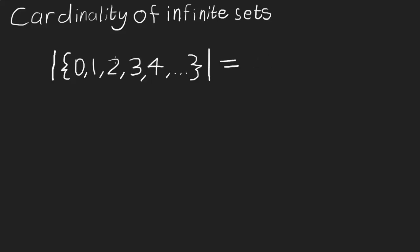So there's a special symbol used to denote the cardinality of the natural numbers. This is the Hebrew letter aleph — the first letter in the Hebrew alphabet — with a little subscript 0. And this is called aleph naught.